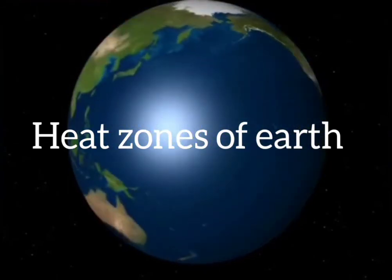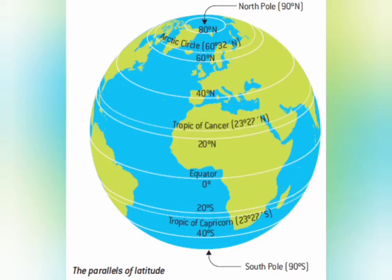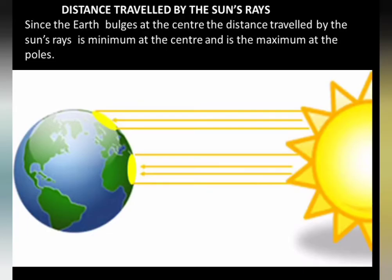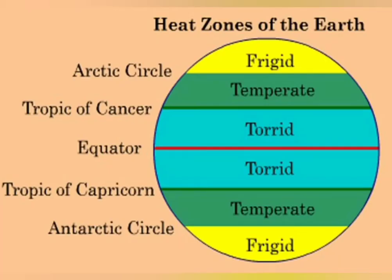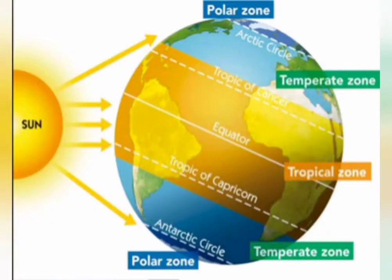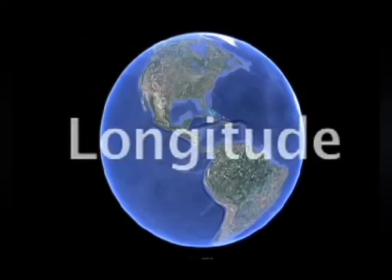There are heat zones on our earth. The area between the Tropic of Cancer and the Tropic of Capricorn receives the maximum heat from the sun; this region is known as the Torrid Zone. The area between the Arctic Circle and the Tropic of Cancer in the Northern Hemisphere, and the area between the Antarctic Circle and the Tropic of Capricorn in the Southern Hemisphere, have moderate temperatures and are called the Temperate Zones.